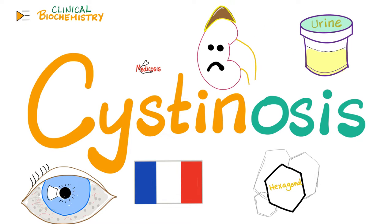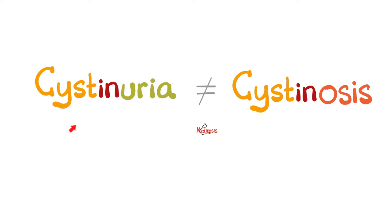In the last video, we talked about cystinuria, and I told you that cystinuria is not the same as cystinosis. If it ends in 'osis,' it means it's a condition — a condition of having abnormal precipitation of cystin amino acids causing crystals, maybe in the cornea or maybe in the urine, forming kidney stones. These are really painful. Cystinuria was the topic of the last video. Cystinosis is the topic of today's video.